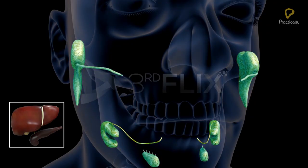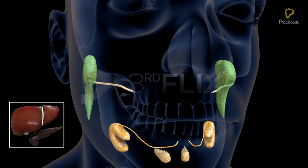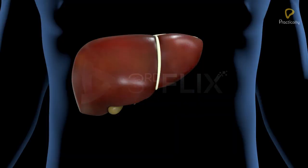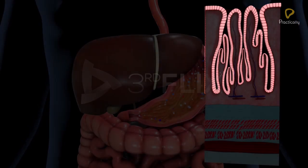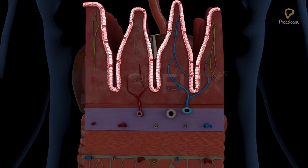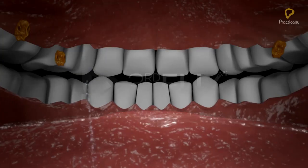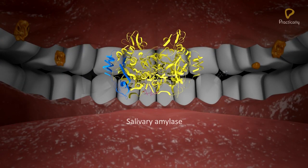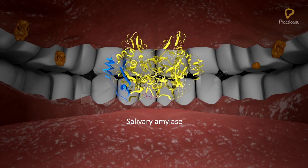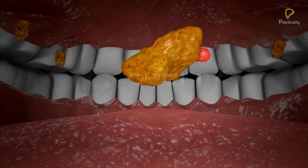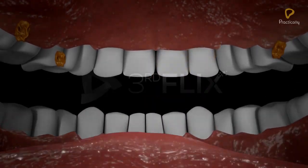The digestive glands in man include three pairs of salivary glands, liver, pancreas, and gastric and intestinal glands. The salivary glands produce saliva, which contains amylase for the digestion of starch. Saliva also contains lysozyme that kills bacteria present in the food.